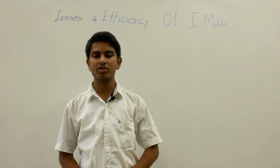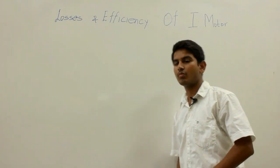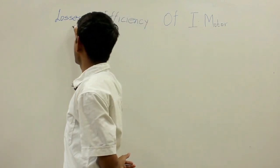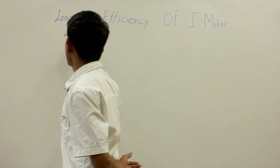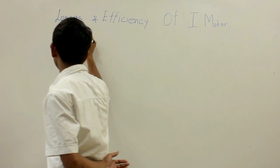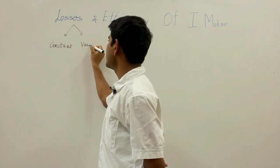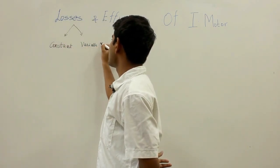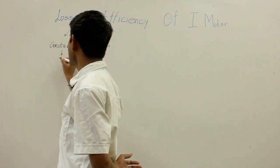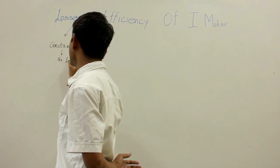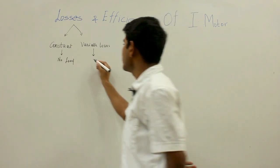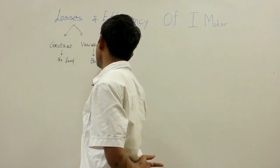In this video, let us discuss the losses and efficiency of an induction motor. There are basically two types of losses: constant losses (or fixed losses) and variable losses. The constant losses can be determined by performing the no-load test on the induction motor, whereas the variable losses can be determined by performing the block rotor test.